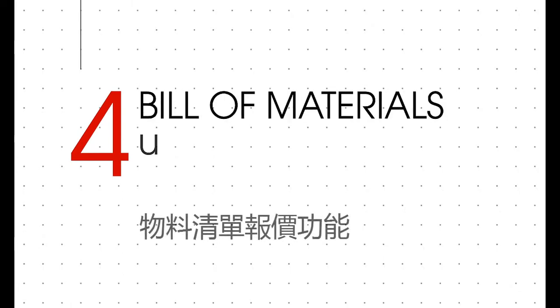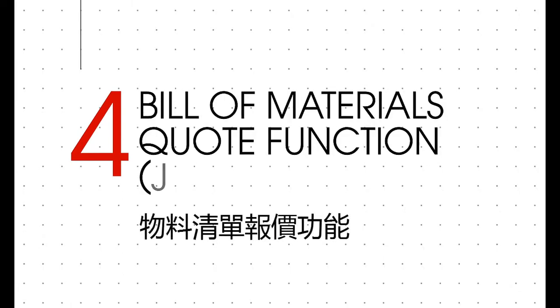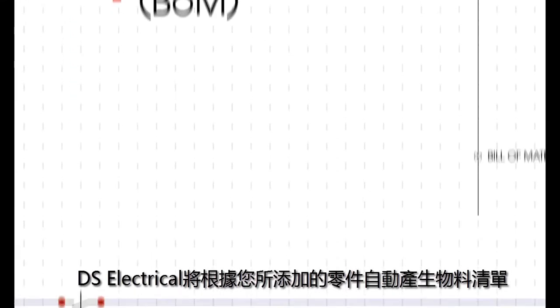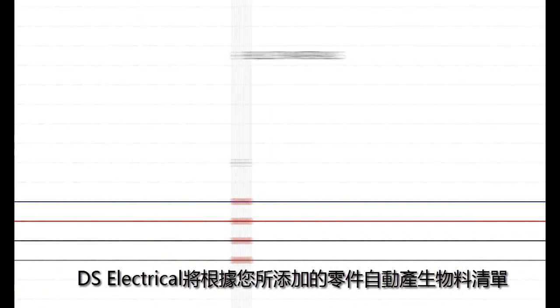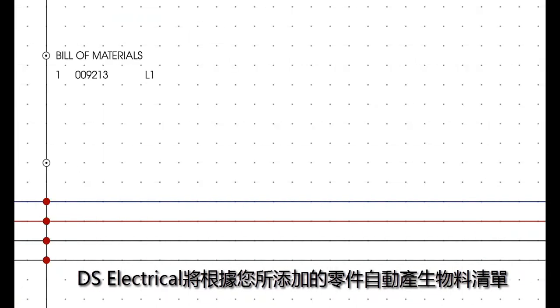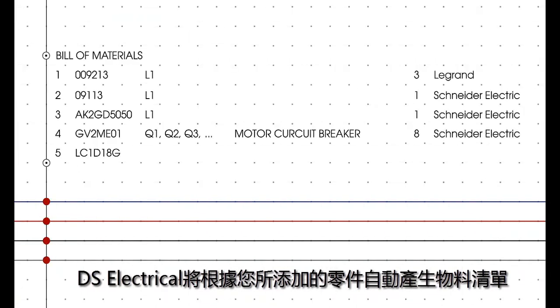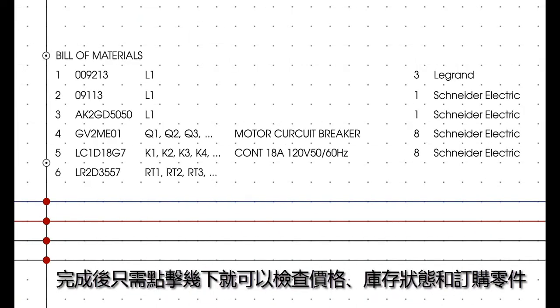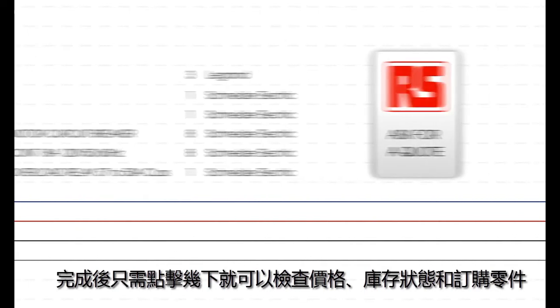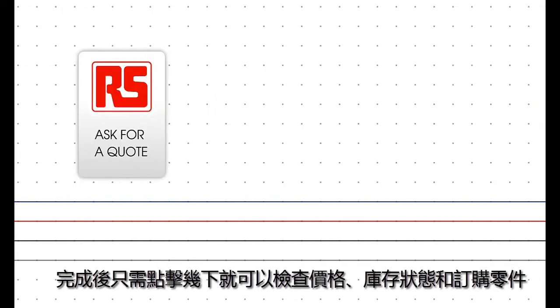4. The Bill of Materials Quote Function. As you create, DesignSpark Electrical automatically generates a list of all the components you've added. Once you're finished, you can check prices, availability and order your parts with just a few clicks.